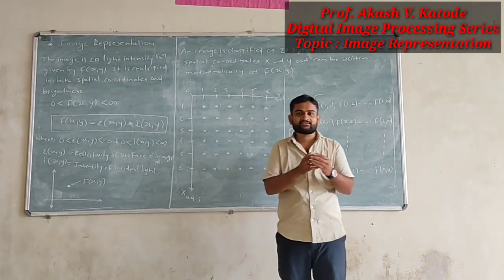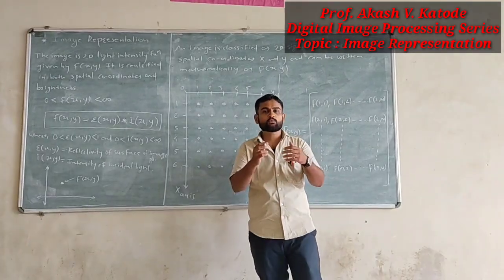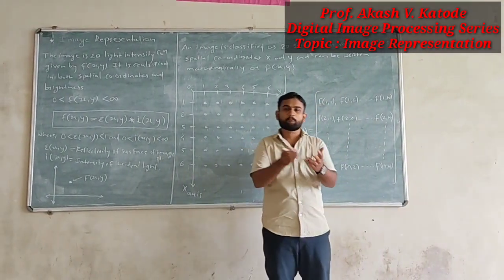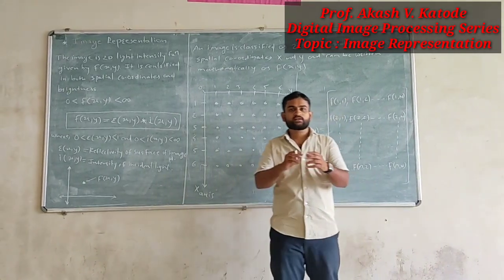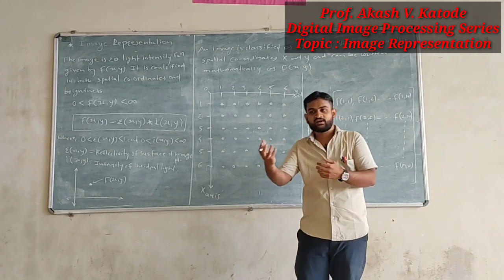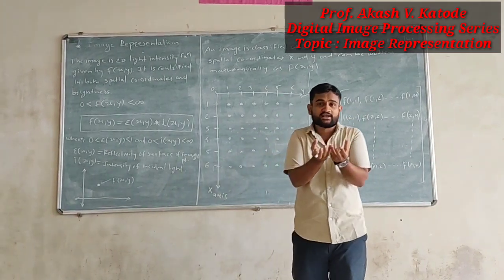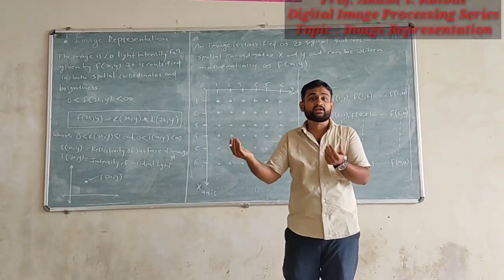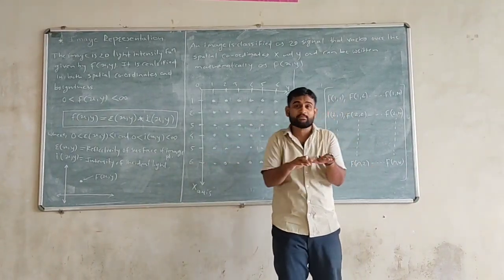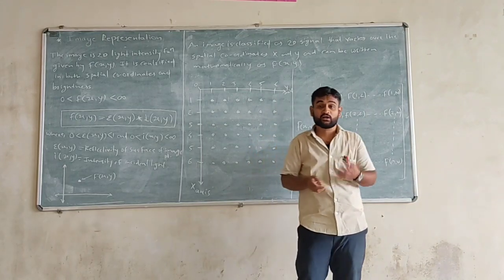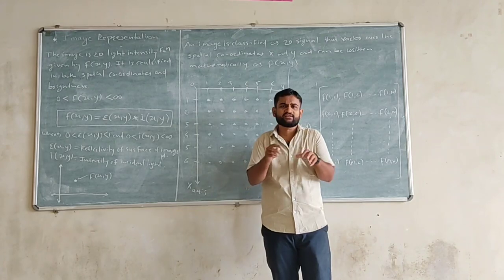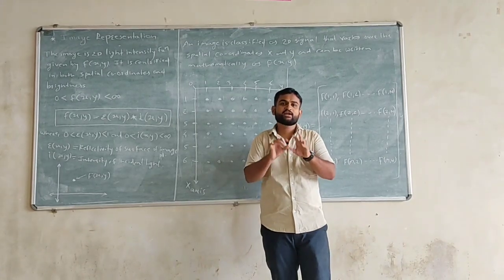What exactly is there inside digital image processing? We have to process images on various backgrounds. For example, we have to compress the image, we have to enhance the image, we have to further process the data of that image. How any image gets transferred through a communication channel, how we compress any image using a compression algorithm, what is image segmentation — multiple points are there in this subject that is image processing.